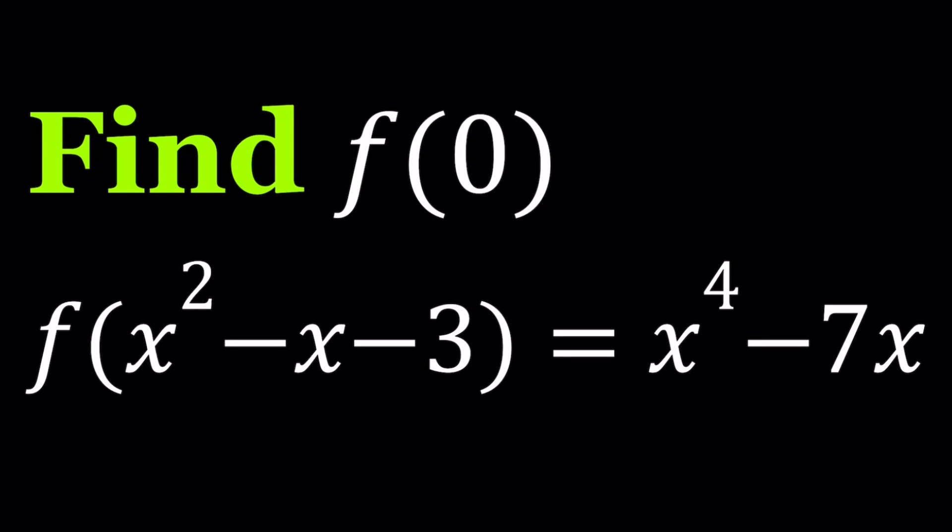Hello everyone, in this video we're going to be solving a nice homemade functional equation. We have f of x squared minus x minus 3 equals x to the fourth power minus 7x and we're going to be finding f of 0. But not only that, I'm also going to talk about some other things. But let's go ahead and solve this problem in at least two different ways.